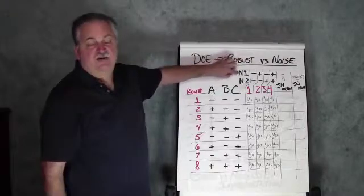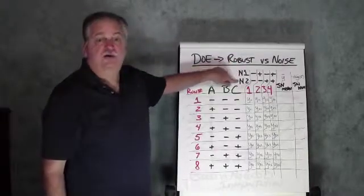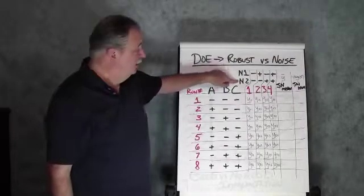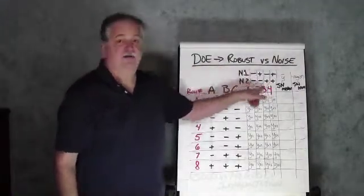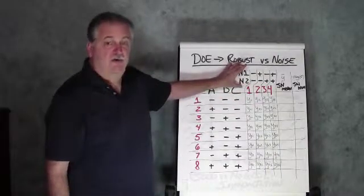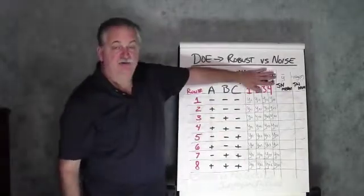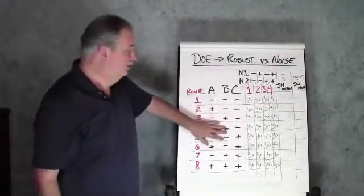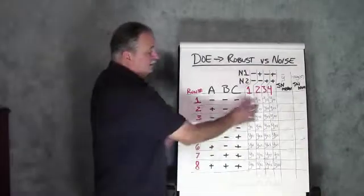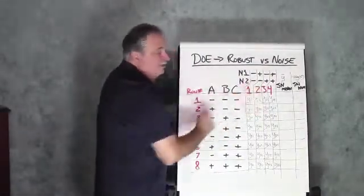And we're going to run this experiment, but we're faced with a situation where we've got two different noise factors. One of these noise factors, let's say it's a change of material, and let's say the other one is the time of the day. So we create another little design of experiments matrix up here. This is called our noise array. This is the inner array, the outer array, if we're to use the language of the good doctor Genichi Taguchi. And we have two factors of two level settings. There's four experimental combinations.